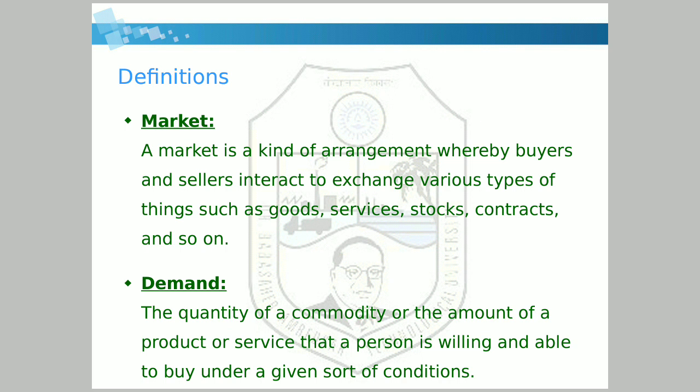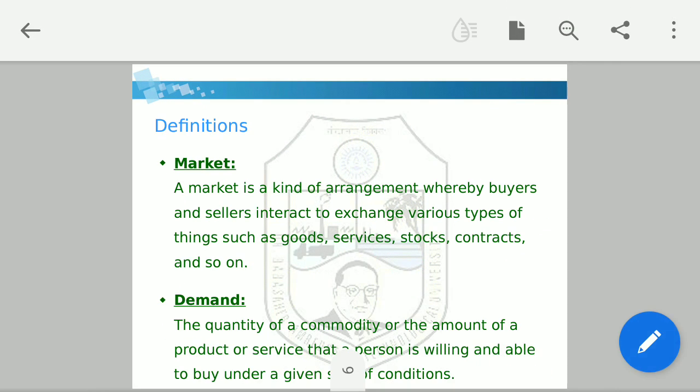The first definition is market. A market is an arrangement where buyers and sellers interact to exchange various types of things such as goods, services, stocks, contracts, and so on. There are two key words: interact — how buyers and sellers interact with each other — and exchange — how they are exchanging goods, services, stocks, or contracts.